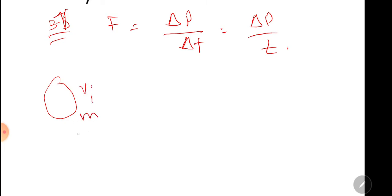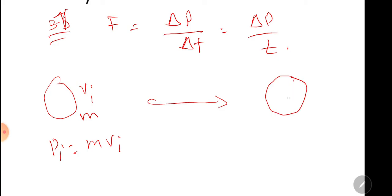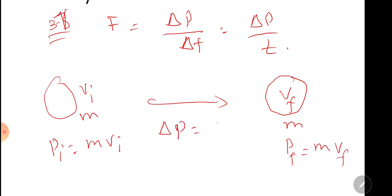Initial momentum is mvi. After some time, velocity changes to vf (final velocity), and final momentum is mvf. So change in momentum is equal to mvf minus mvi.